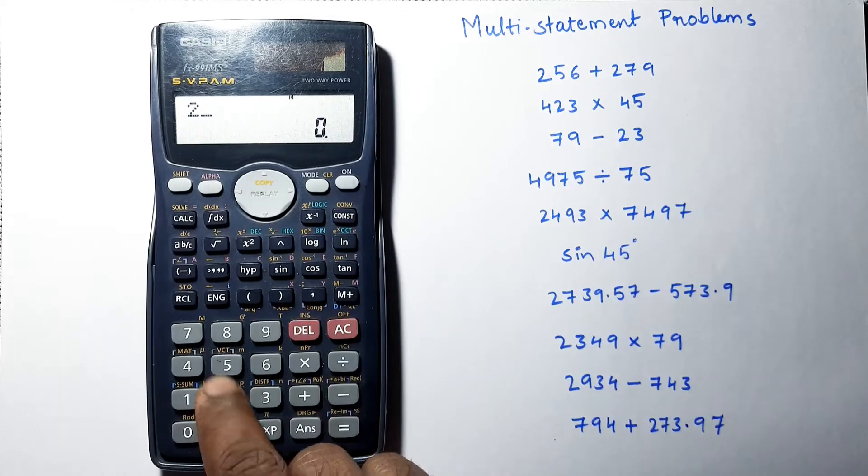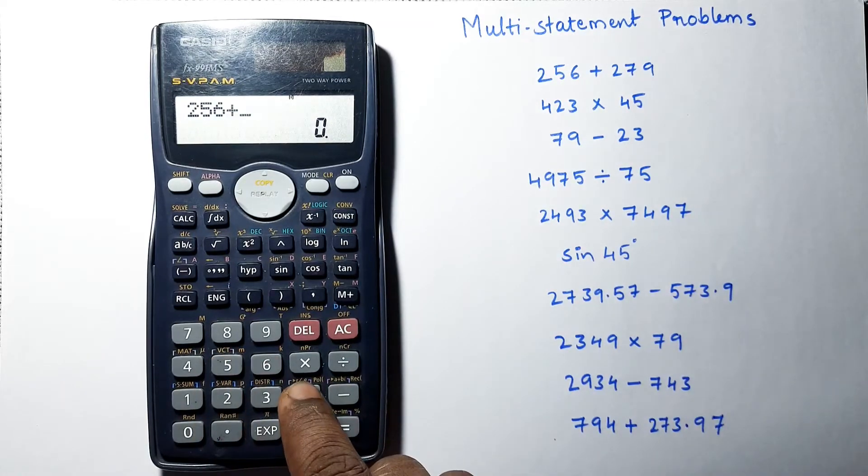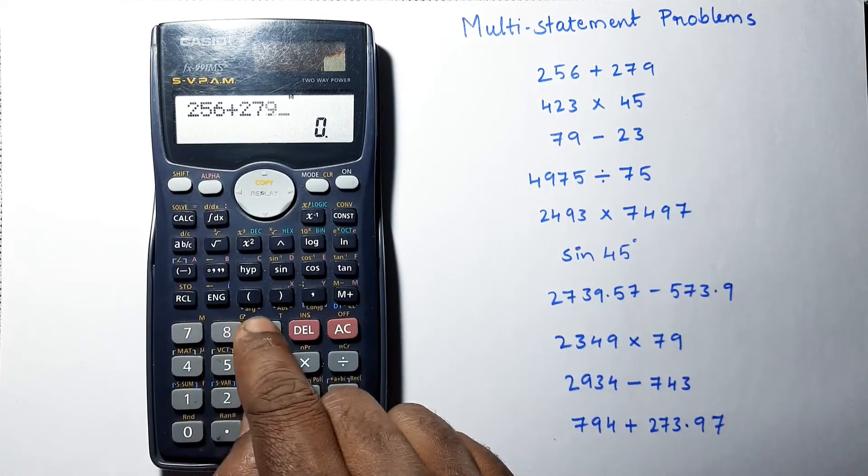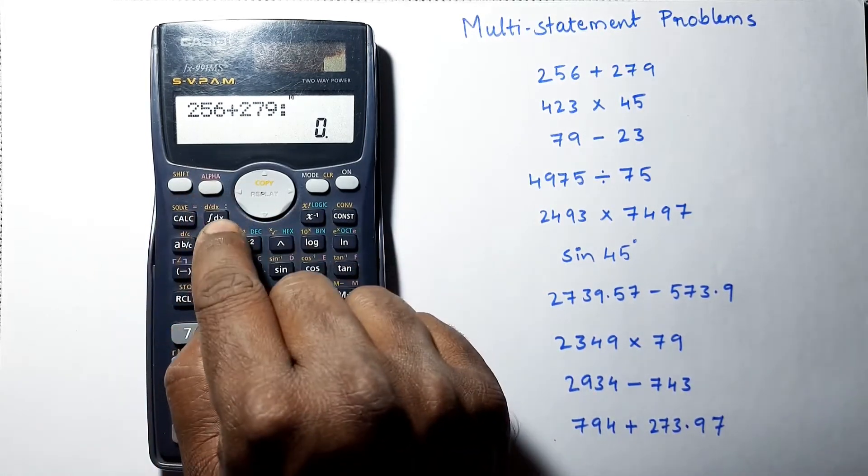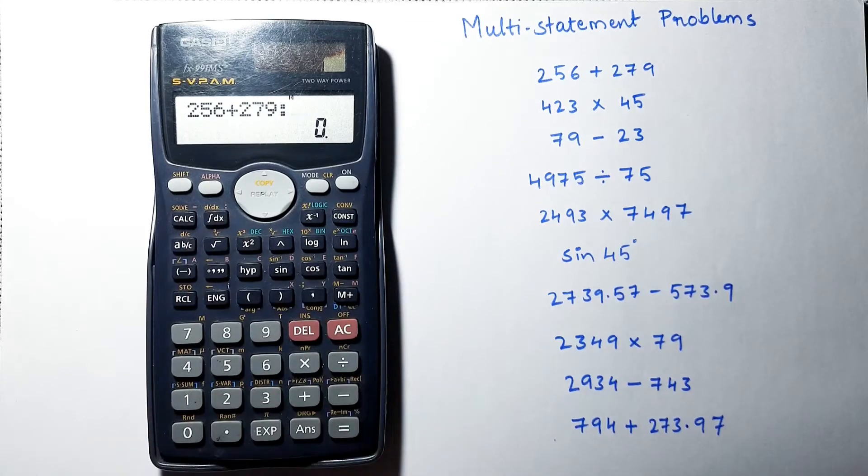256 plus 279. Now we have to press the colon - press alpha and integral, it will select the colon symbol. Now keep entering next values: 423 times 45, again press colon, 79 minus 23.